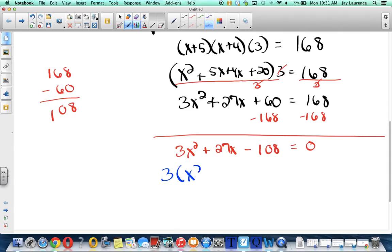And then x squared plus a 9x. I'm dividing by 3 in case you're wondering. In case I'm going too fast. And let me see. 108 divided by 3 is going to be 36. Yeah. Minus 36.